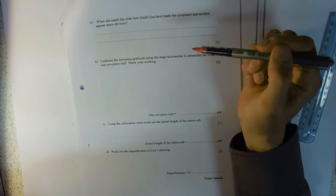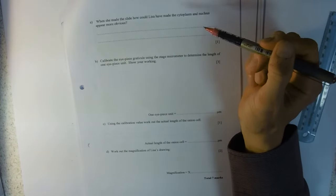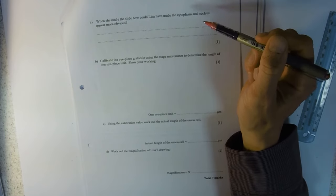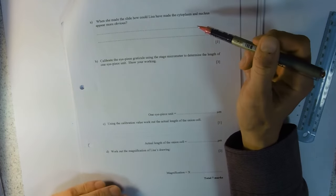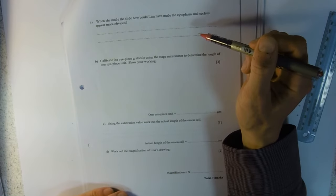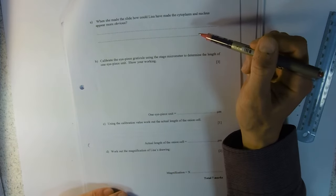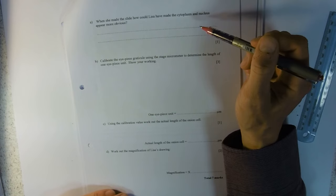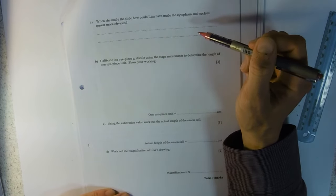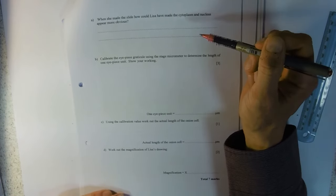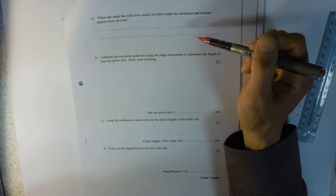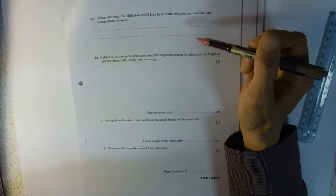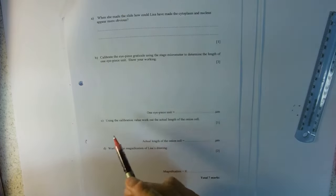However, there's a little question before then. How do we make the cytoplasm and nucleus appear more obvious? Well in the practical you did something before looking at the slide. You got the onion epidermis then you added something to it. What did you add to it, what chemical, and what was the general name of what you were doing?